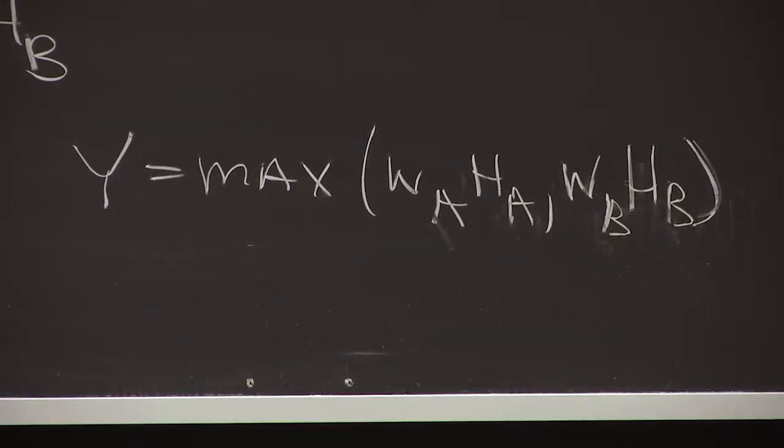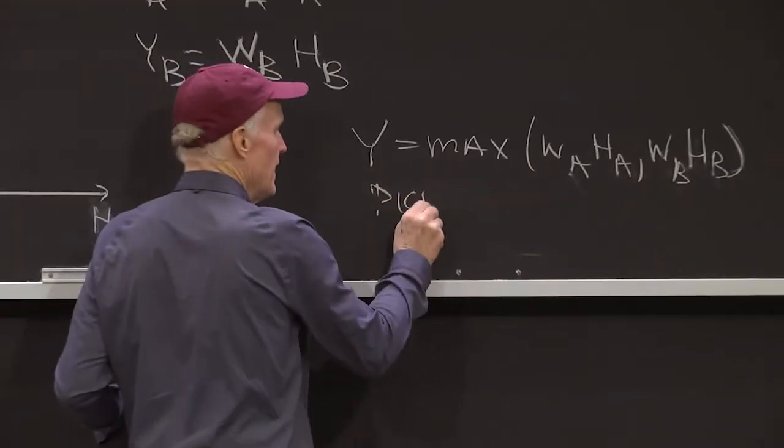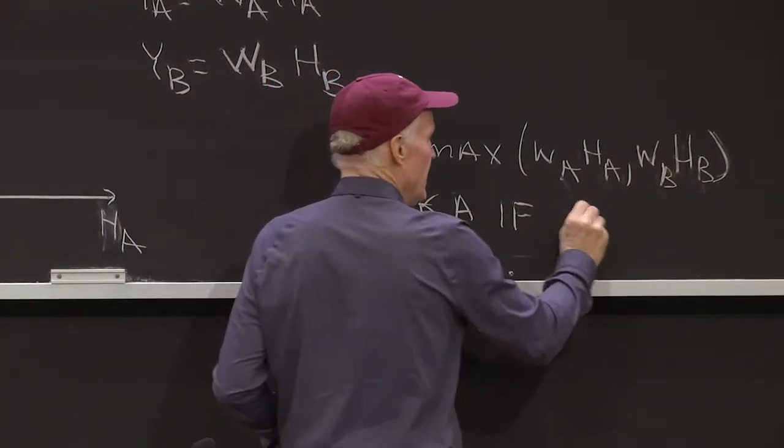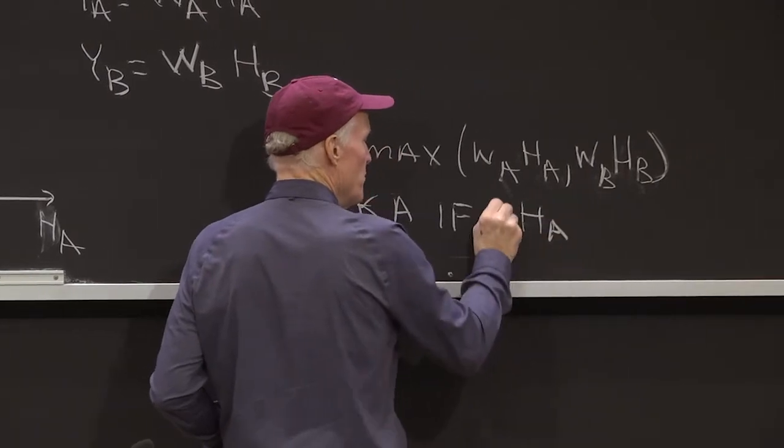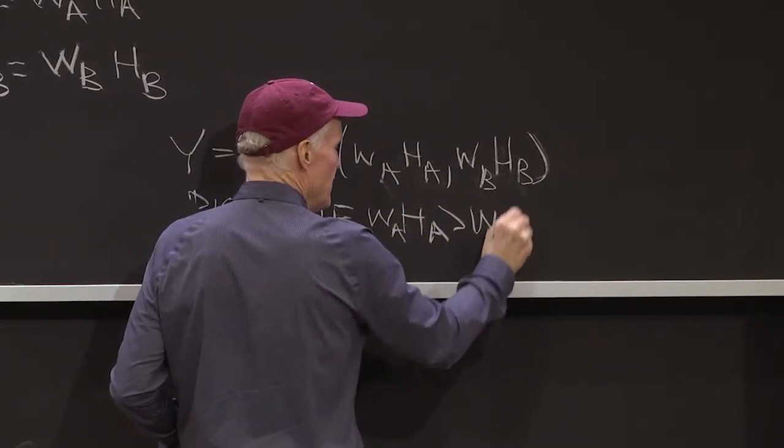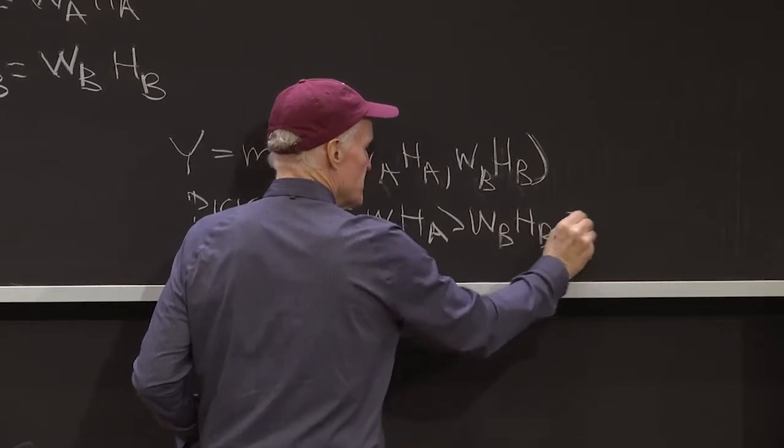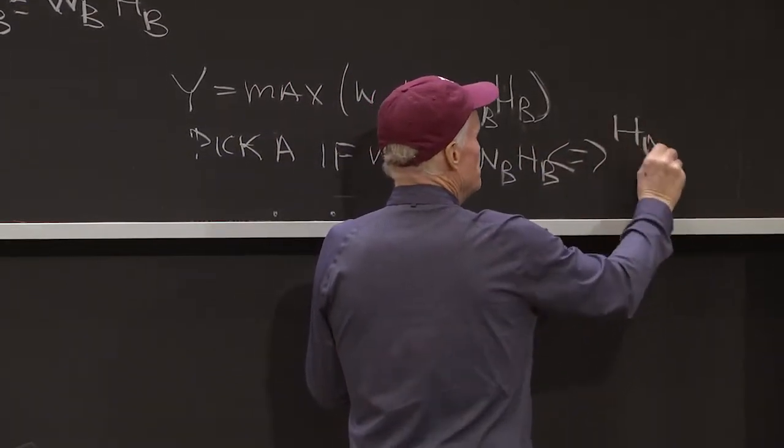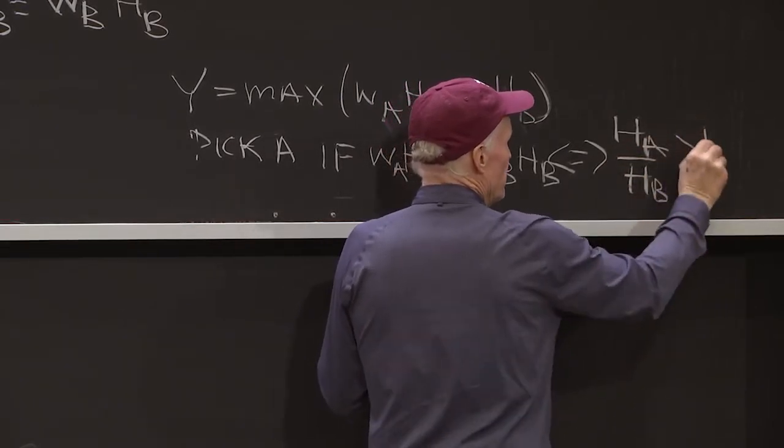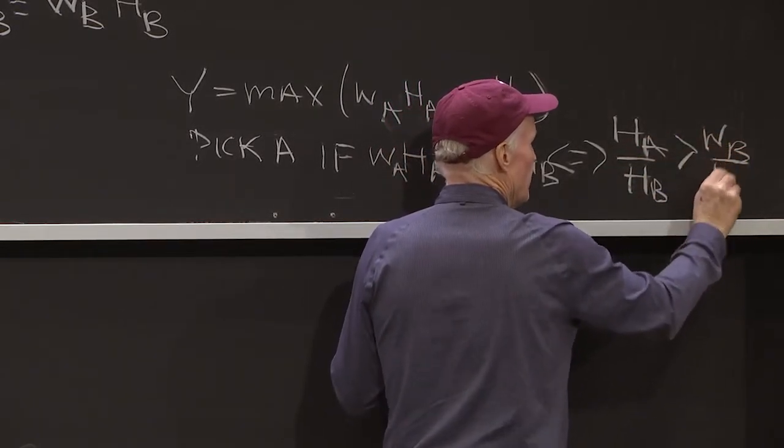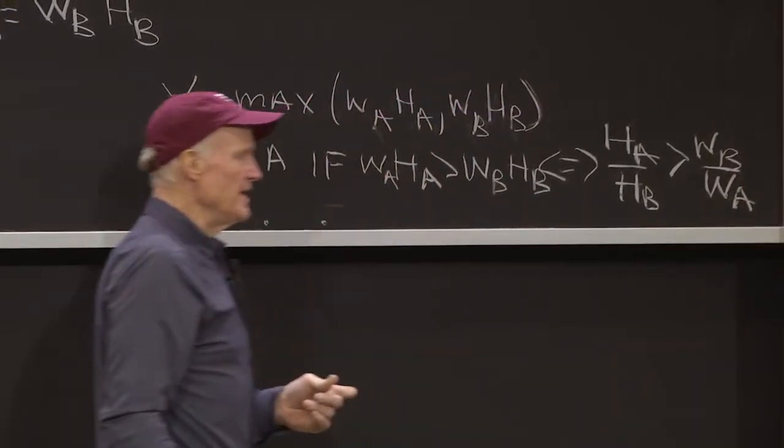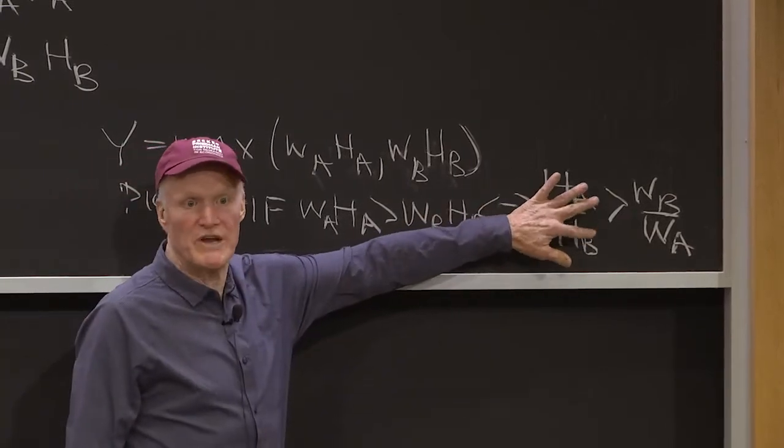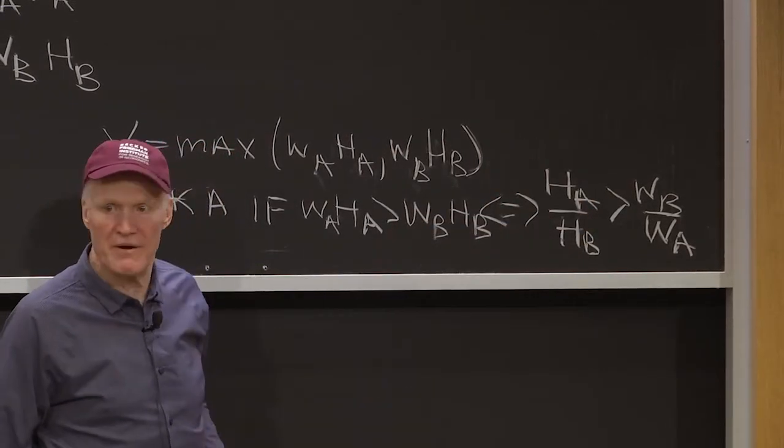So what that means is you pick A if WA*HA is bigger than WB*HB, which is the same as saying HA over HB is bigger than WB over WA. So basically that's the notion of comparative advantage. It doesn't matter how big my H's are, it's just the ratio.